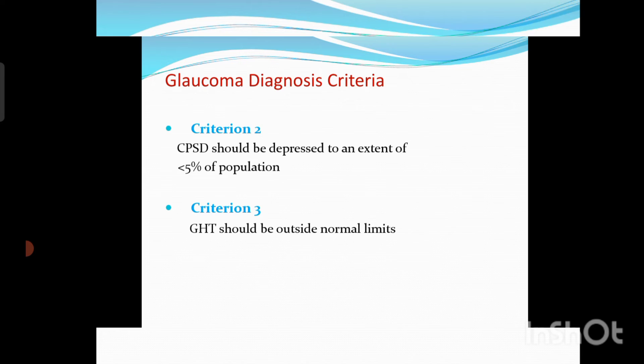Criteria 2 is that CPSD should be depressed to an extent of 5% of the population — meaning we have to see asymmetry between the two hemispheres. Criteria 3: the GHT should be outside normal limits. So for this patient, Anderson criteria 1 is matching, criteria 2 shows CPSD at minus 13.42 dB with p less than 0.5%, and GHT is outside normal limits — so this patient is confirmed with glaucoma.